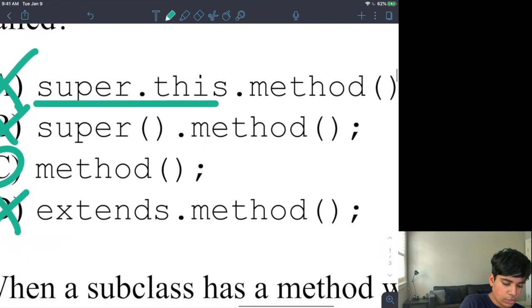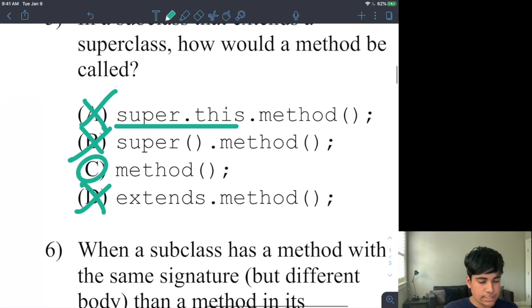Super open close parentheses dot method open close parentheses, that's not correct. And extends is also not correct. And you may be wondering why is super open close parentheses not correct? Well, if you do super open close parentheses, you're calling the constructor. So you cannot get a method out of a constructor like that. You do it out of the class.